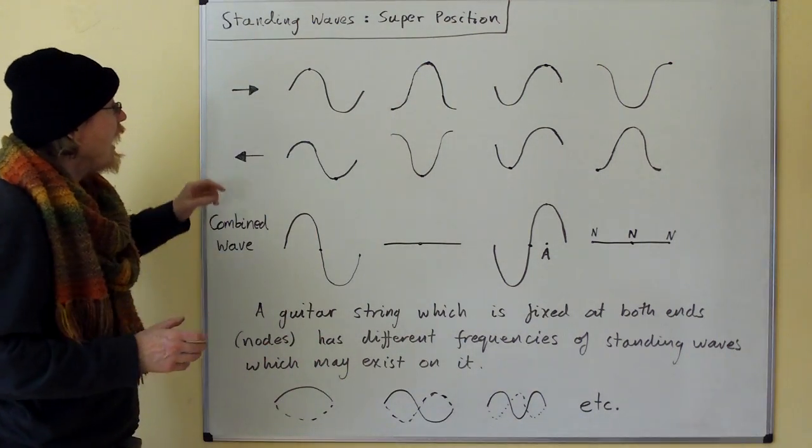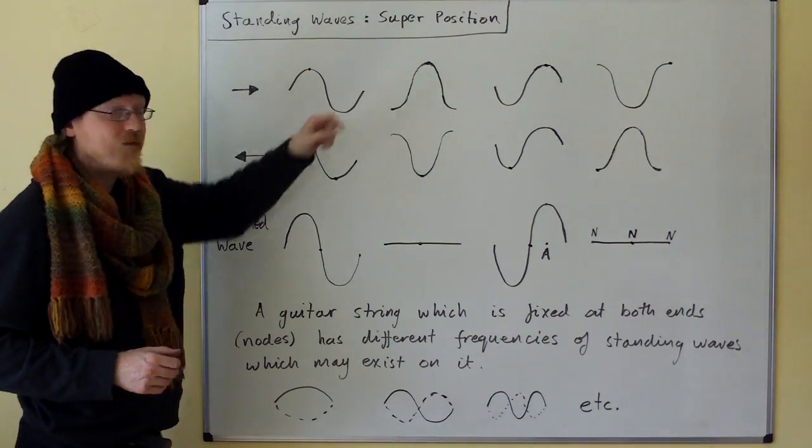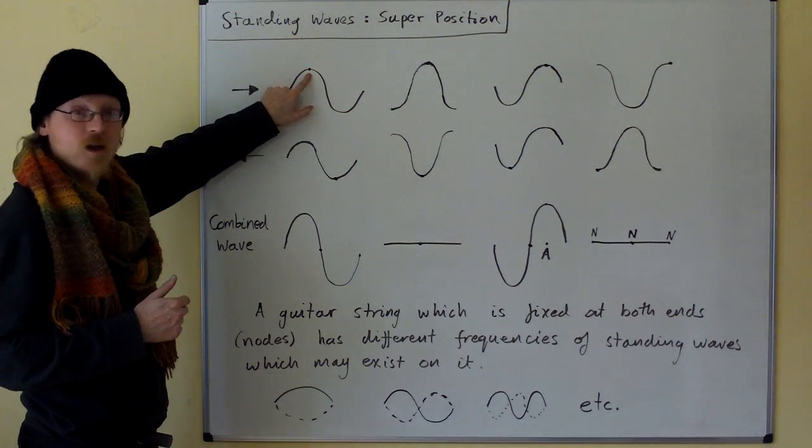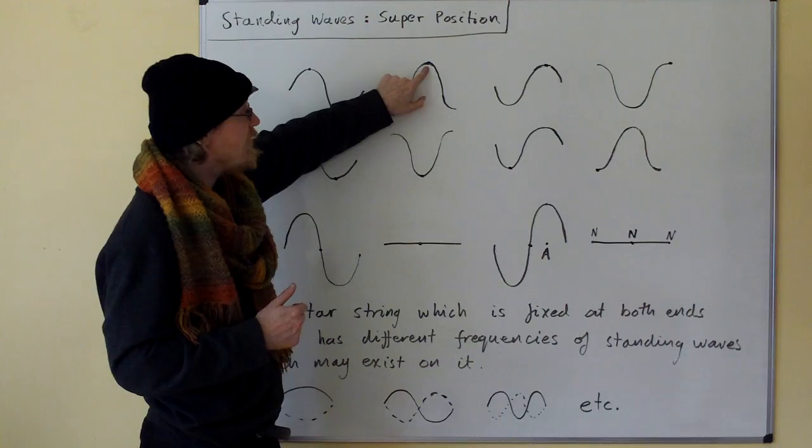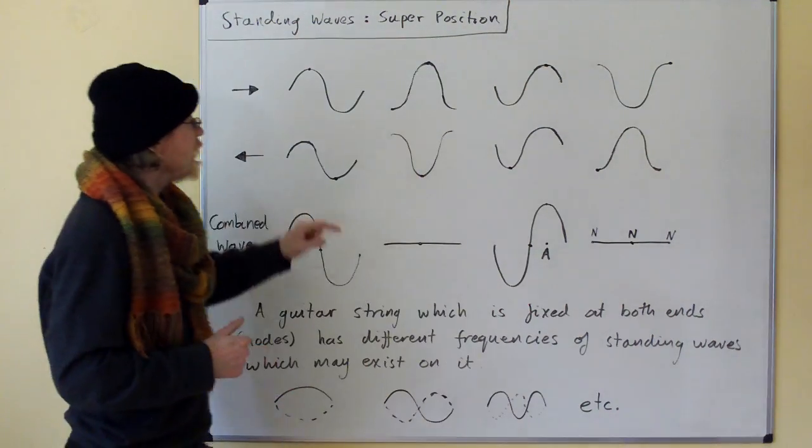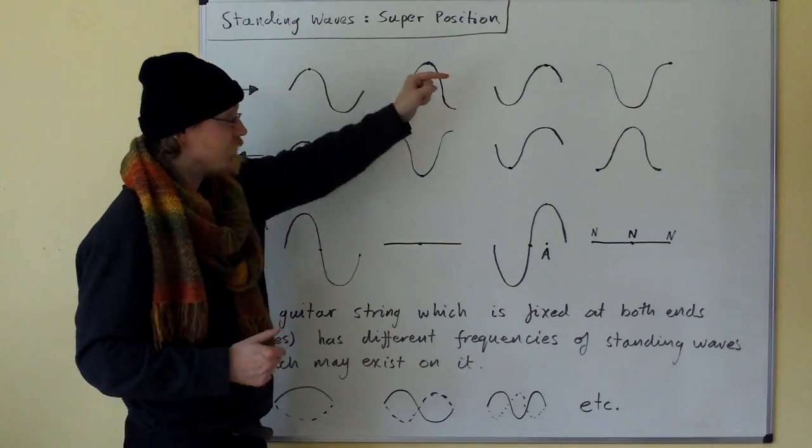How do we know that this wave is traveling to the right? Well, let's look at this peak. First this peak is before the middle, then it's at the middle, then it's just after the middle, and then it's at the edge. So we can clearly see that this peak is traveling to the right.